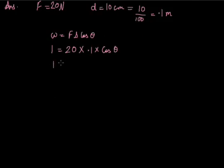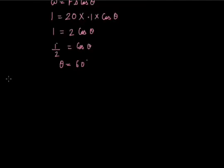So that will be 1 = 20 × 0.1 × cos(θ), which gives 1/2 = cos(θ). This means we have to evaluate when the value of cos(θ) is half. The value of cos(θ) is half at θ = 60 degrees. Hence the angle between the force and displacement is 60 degrees.